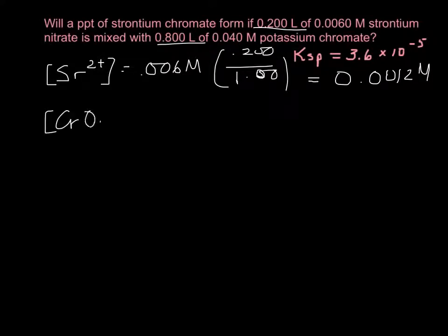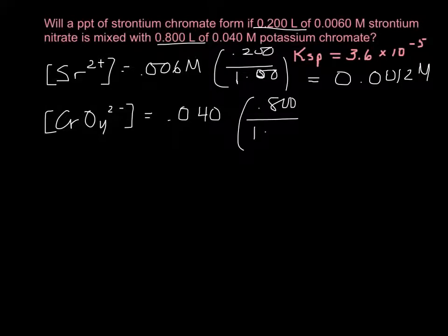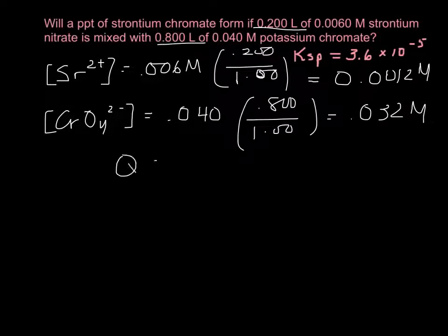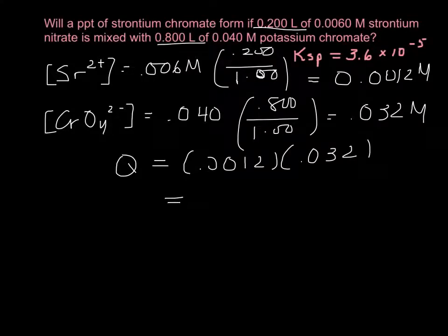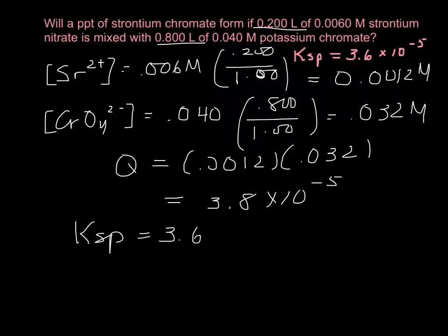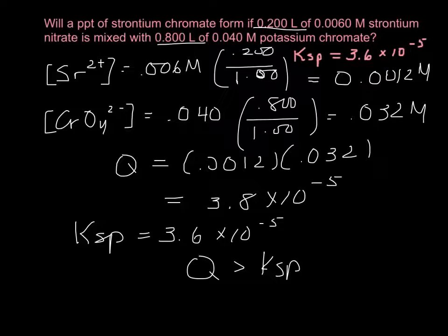For the chromate, we take its original concentration of 0.04, multiply by its volume over the new total volume, and get a new concentration of 0.032 molar. Now we plug into Q: strontium times chromate = 0.0012 times 0.032, which gives Q = 3.8×10⁻⁵. The Ksp is 3.6×10⁻⁵, so Q is larger than Ksp — not by much — but we will see a precipitate. Just a little bit of precipitate forms because Q is slightly bigger than Ksp.